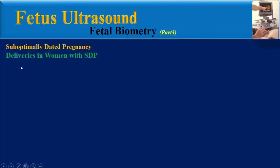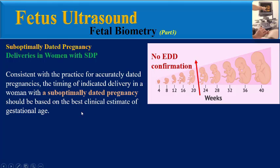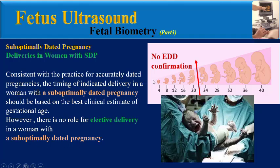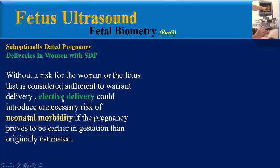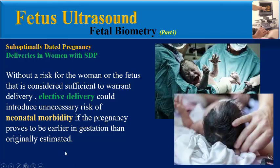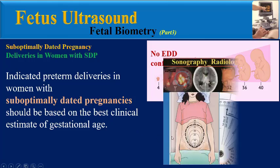How must we decide about deliveries in women with sub-optimally dated pregnancies? Consistent with the practice for accurately dated pregnancies, the timing of indicated delivery should be based on the best clinical estimate of gestational age. However, there is no rule for elective delivery in a woman with a sub-optimally dated pregnancy. Without a risk for the woman or fetus sufficient to warrant delivery, elective delivery could introduce unnecessary risk of neonatal morbidity if the pregnancy proves to be earlier in gestation than originally estimated.